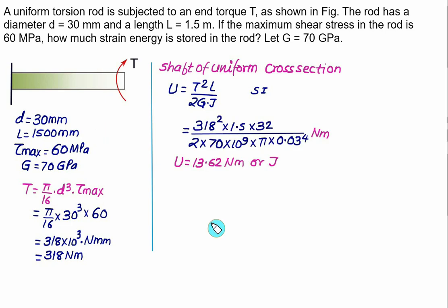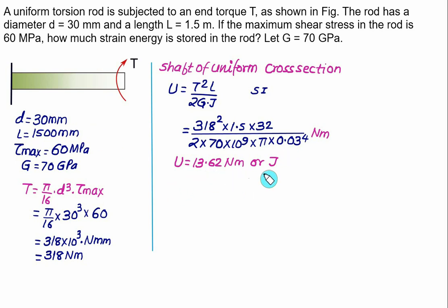So torque is 318 N·m squared, length equal to 1.5 m, G equal to 70 × 10⁹ Pa, polar moment of inertia is (π/32), and diameter is 0.03 m. The answer is 13.62 N·m, which is the same as 13.62 Joules. So this is the standard procedure to find out the value of strain energy in the case of torsion.